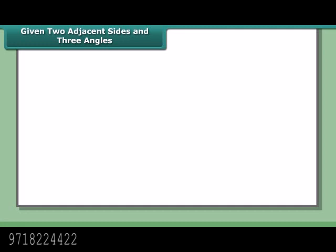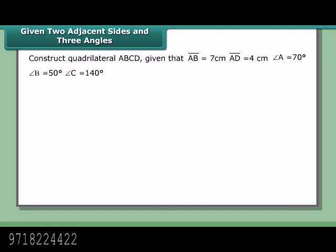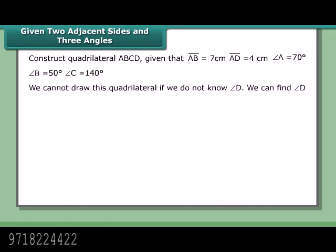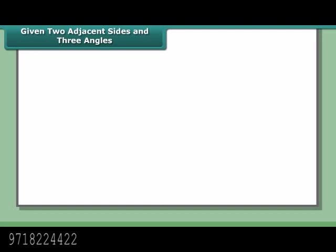Given two adjacent sides and three angles, construct quadrilateral ABCD with AB = 7 cm, AD = 4 cm, angle A = 70°, angle B = 50°, and angle C = 140°. We cannot draw this quadrilateral if we do not know angle D. We can find angle D: angle D = 360° − (70° + 50° + 140°) = 100°.